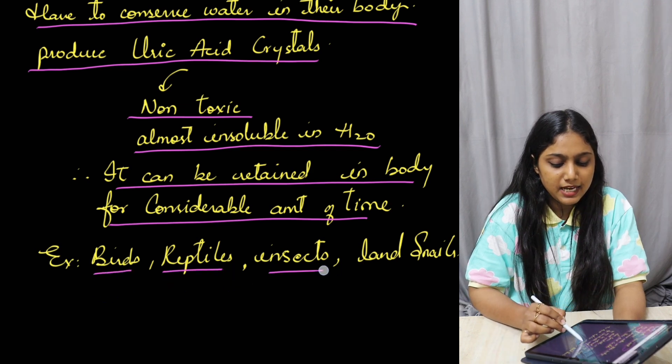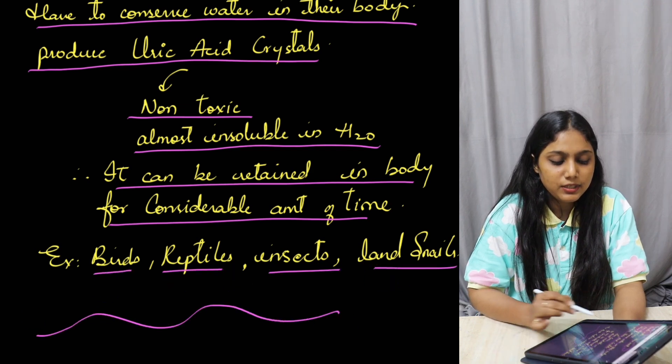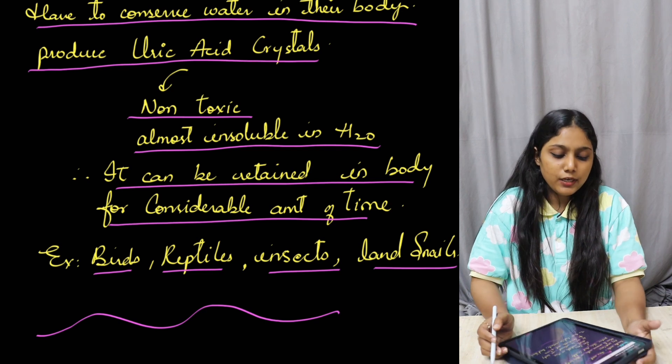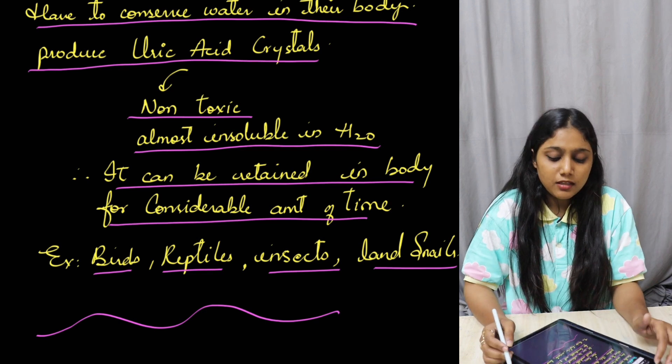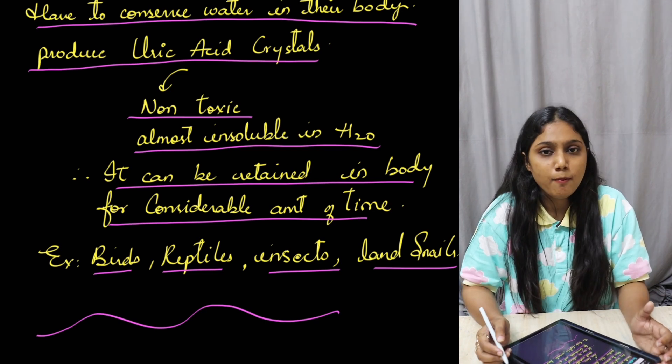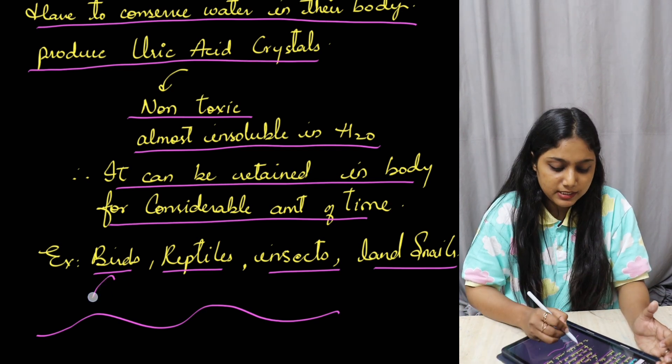Examples of uricotelic animals include birds, reptiles, insects, and land snails. These animals excrete uric acid. Uric acid is usually excreted in the form of a paste or pellet. In birds, you can see the excretory product appears in a white and green combination — the white color is basically uric acid crystals.